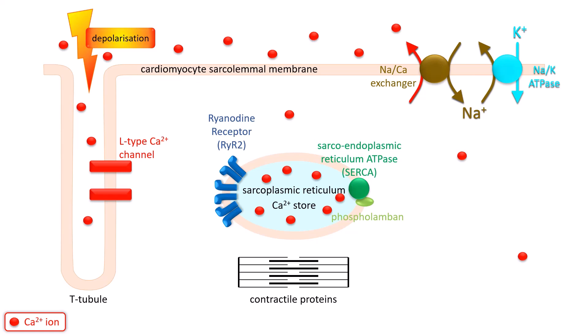Note that the activity of SERCA is under the control of a protein called phospholamban, which normally has an inhibitory effect on SERCA. This inhibition can be removed by intracellular messengers such as cyclic AMP and cyclic GMP, and this increases SERCA activity, resulting in a higher rate of calcium accumulation into the sarcoplasmic reticulum.